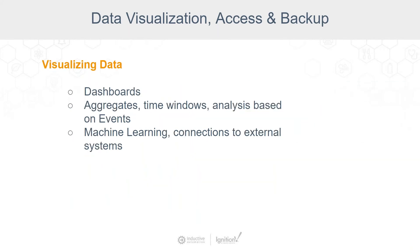TagHistorian generally feeds dashboards and has built-in aggregates for time windows — min/max, standard deviation, and similar analyses. Event data can also be shown in those dashboards, used as time windows for aggregates, or aggregated over specific points in the event tables. Generating aggregates from those tables is as easy as writing a SQL query, which for simple cases is straightforward.